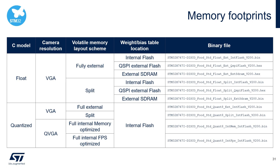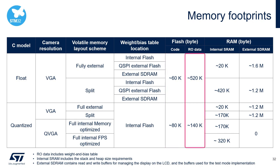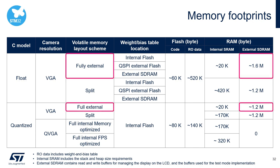Using the same memory configurations table, here are the memory footprints. The code size of the quantized model is 20 kilobytes more than the float model, but the weight and bias table is less than one-third of the float model. For the RAM size, in the fully external scheme, the quantized model saved 400 kilobytes in external SD RAM.